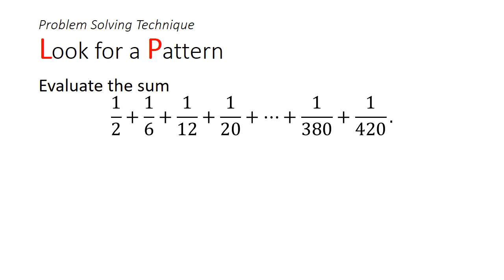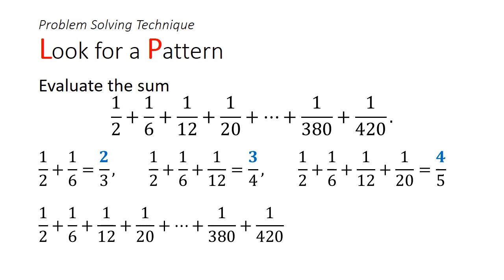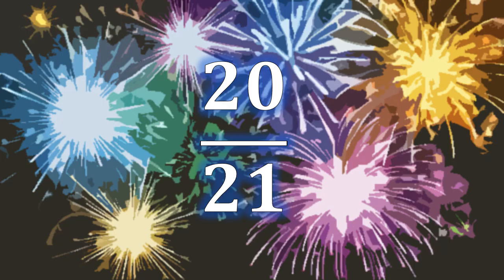This problem has been seen in primary schools, and the expected solution is to brute-force it and look for a pattern. Adding the first two terms gives 2 over 3; adding a third gives 3 over 4; adding a fourth gives 4 over 5. The pattern is: the number of terms gives the numerator, and the denominator is just the numerator plus 1. Since we have 20 terms, the answer is 20 over 21.